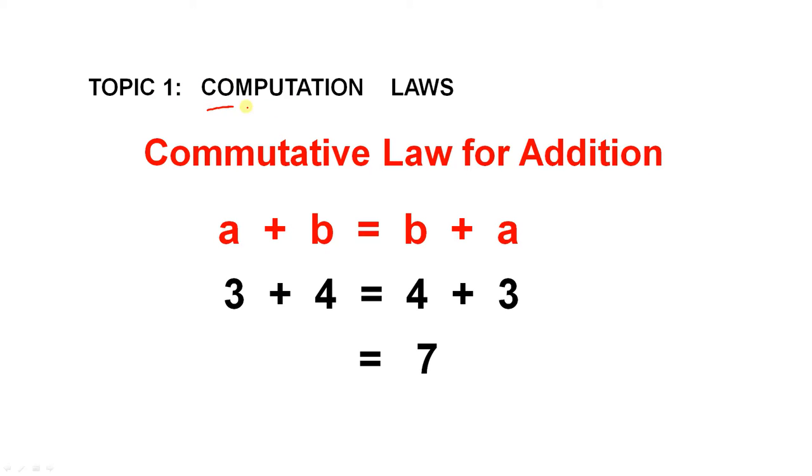Topic 1 for today involves computation laws. The first law is the commutative law for addition. That tells us that if you add two numbers together, a plus b, you will derive the same answer if you add b plus a. So you can have the numbers in any order. For example, if you add 3 and 4 together and you add 4 and 3 together, you get the same answer of 7.